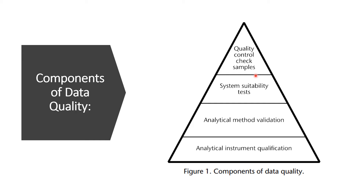Next is quality control check samples. A reference standard or calibration standard is used to calculate the result of unknown samples. QC check samples are analyzed along with unknown samples as part of routine analysis to ensure that the analytical process is under control and producing accurate results. Basically, the system suitability test and quality control check samples ensure the quality of analytical results immediately before or during sample analysis. So first, when you procure any instrument, that instrument should be qualified; then analytical method validation needs to be performed on that qualified equipment, and then you perform the system suitability test and quality control check samples so that the generated data has appropriate and acceptable quality.